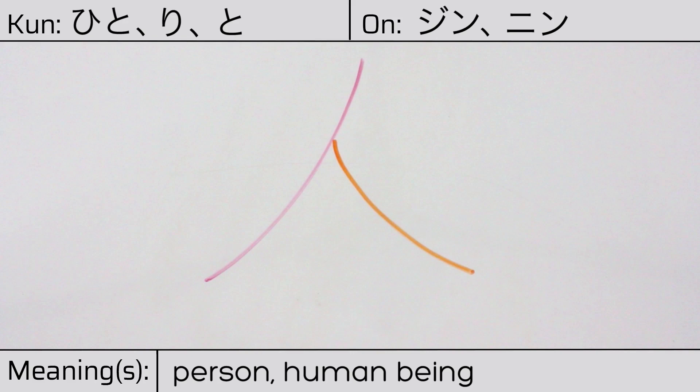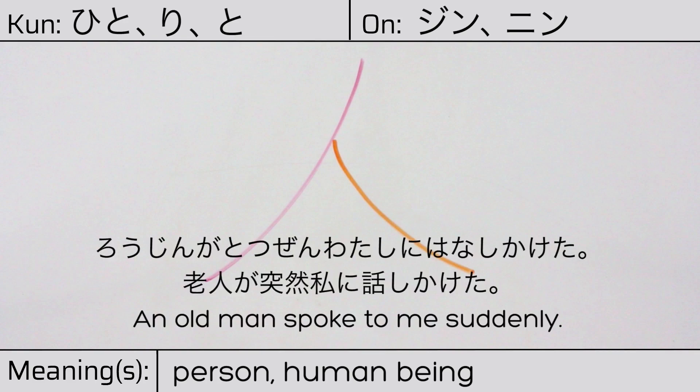Our example sentence is 老人が突然私に話しかけた. An old man spoke to me suddenly.